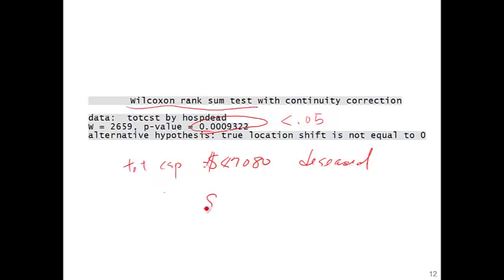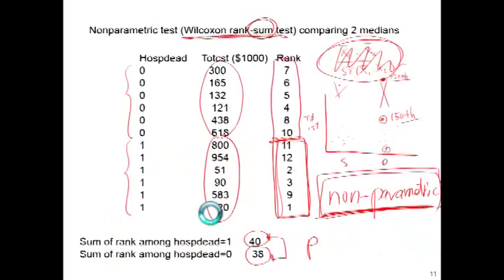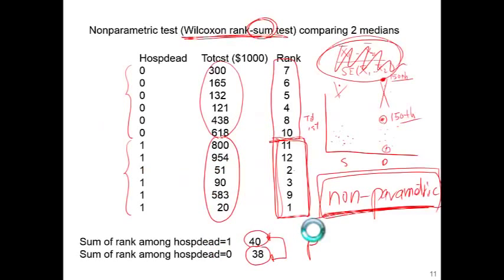And it was $27,437 in survived patient. And difference was statistically significant. We better not to say less than p equal, we better to put exact value of p-value.